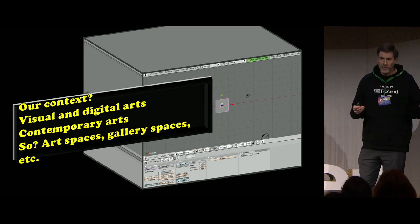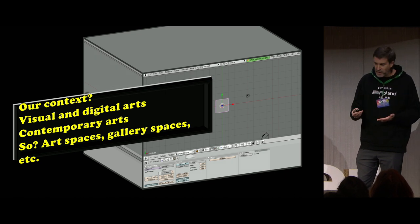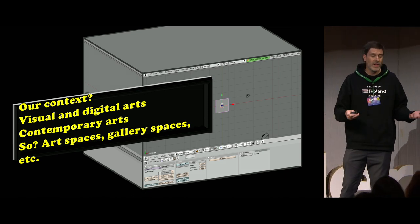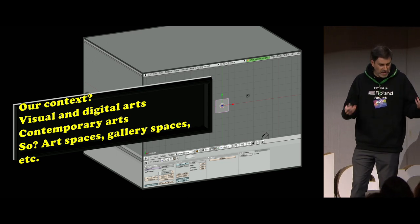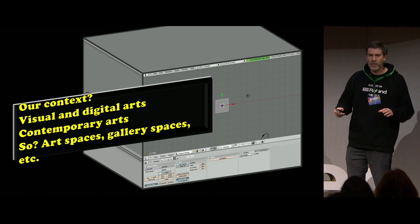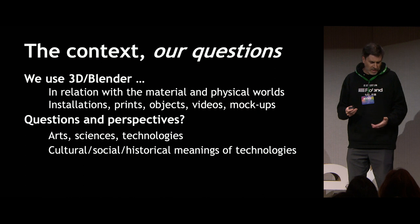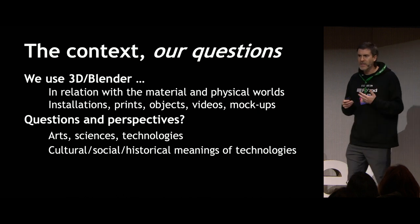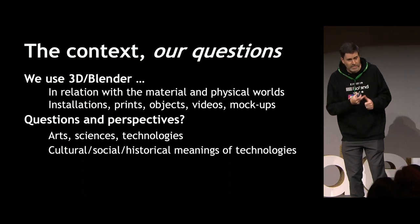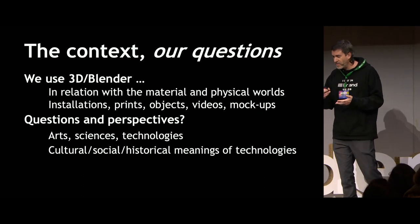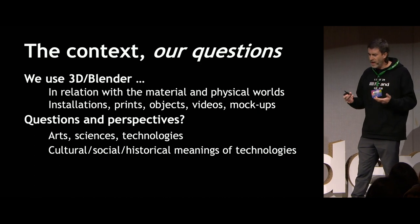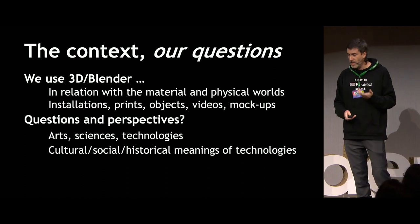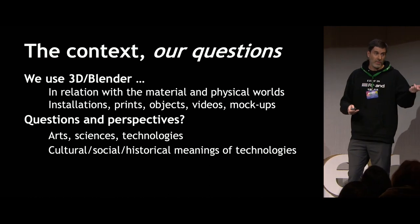The meaning of this is that we work in a very specific context in the visual and digital arts and contemporary arts. Typically the places where we present the outputs of our work are art spaces, gallery spaces, artist-run centers, things like that. We use 3D and Blender always in relation with the material and physical world — installations, 2D or 3D prints, objects, video, and even mock-ups. One of the driving questions we all have is the relation between art, science, technology, and all the cultural, social, and historical aspects of these technologies.